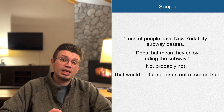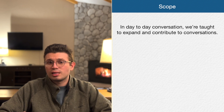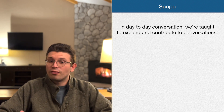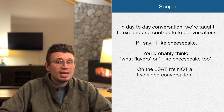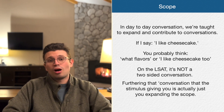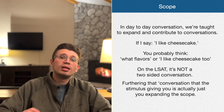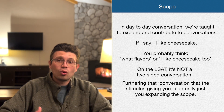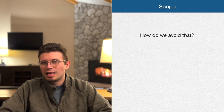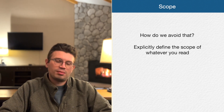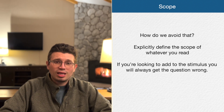The test takes advantage of how in day-to-day conversation we're taught to expand and contribute. If I say 'I like cheesecake,' you'd probably think about flavors — but furthering the conversation that the stimulus gives you is just expanding scope and putting words in the author's mouth. They're trying to exploit how you're trained to think and speak in normal everyday scenarios. To avoid it: explicitly define the scope of whatever you read. If you're looking to add to the stimulus, you will always get the question wrong.